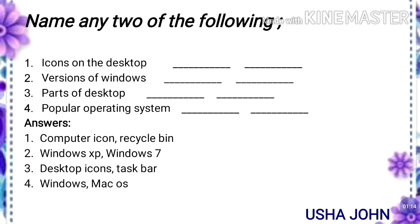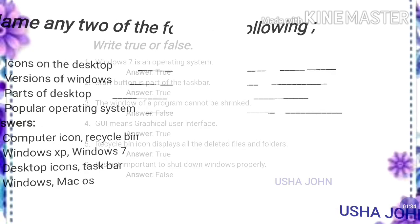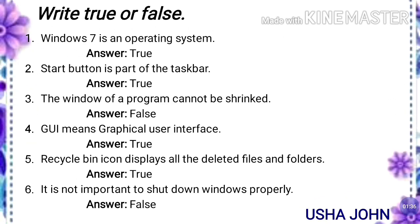So many versions are there; I gave two. Third one: parts of desktop — desktop icons, taskbar. Fourth one: popular operating systems — Windows and Mac OS. True or false: first one, Windows 7 is an operating system.